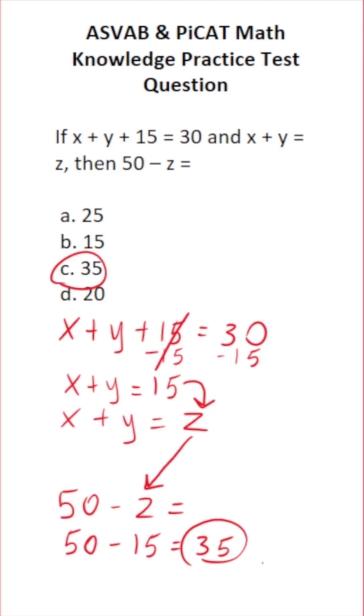Now, if you couldn't do 50 minus 15 mentally, you could always do it off to the side. 50 minus 15: zero minus five, we can't do. We have to borrow, this becomes four, this becomes 10. 10 minus five is five, four minus one is three. So that is that one.